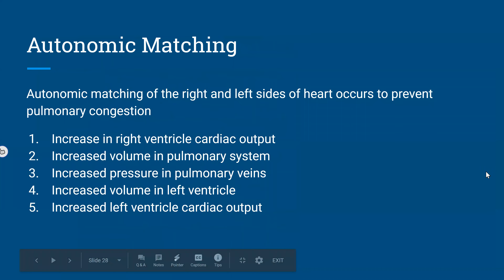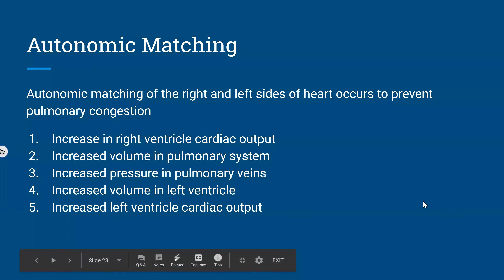Autonomic matching between the right and left sides of the heart prevents pulmonary congestion. Increased right ventricle cardiac output increases volume and pressure in the pulmonary system, which increases volume in the left ventricle and increases left ventricular cardiac output — so what goes in one end comes out the other.